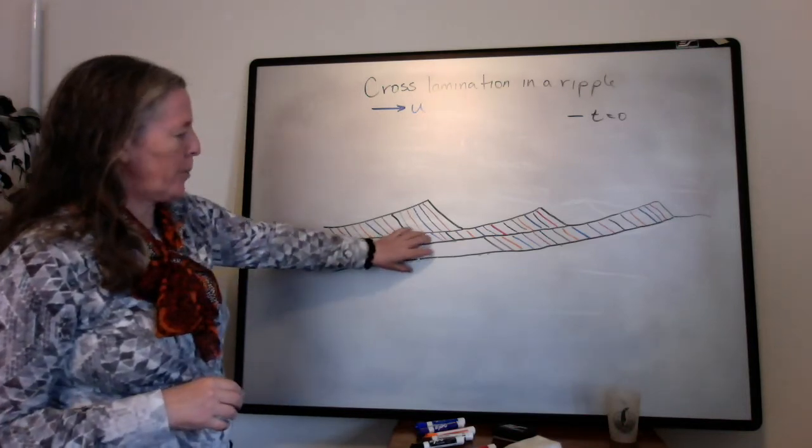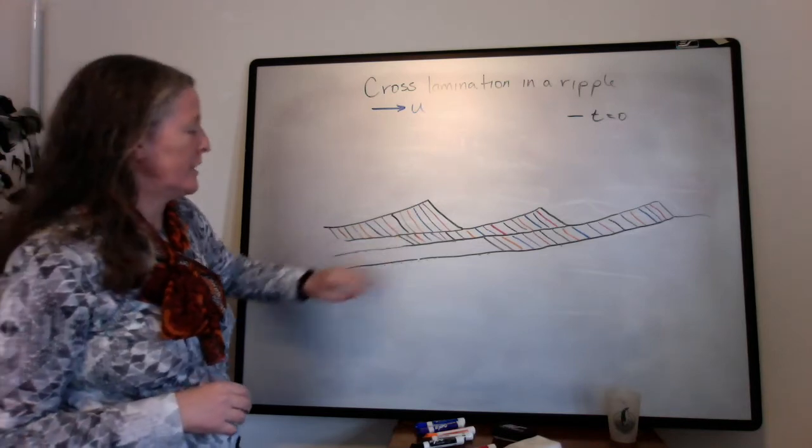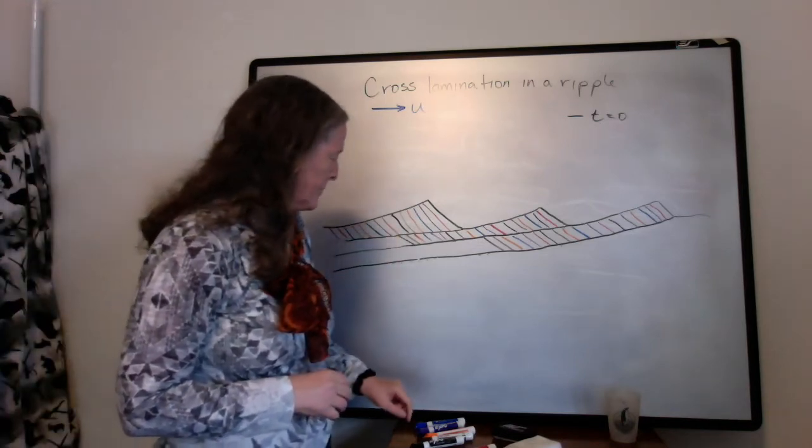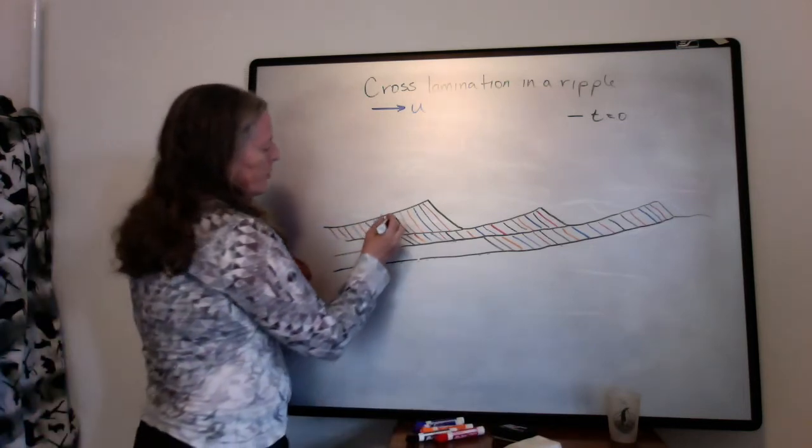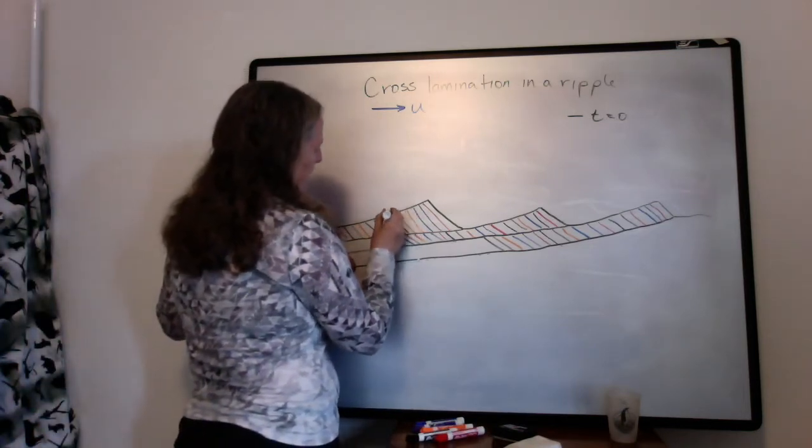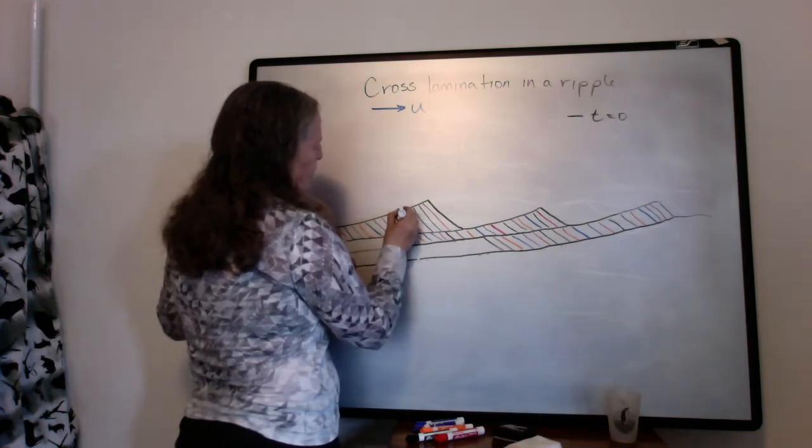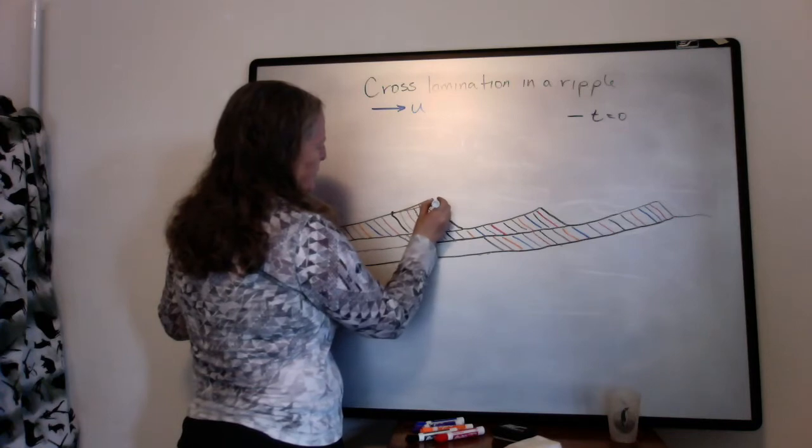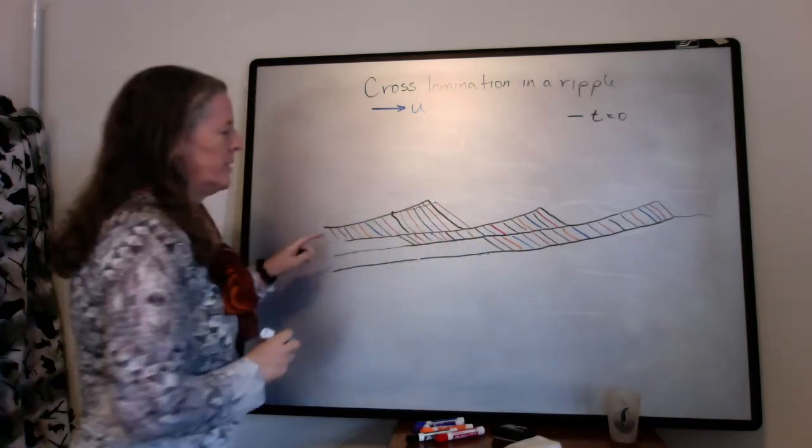So this lower part down here, which is the history of the ripple migration, is the cross lamination part. Okay, so what we have earlier in the videos, we talked about how we have the attachment point, erosion upstream of the attachment point, and the formation of another layer.